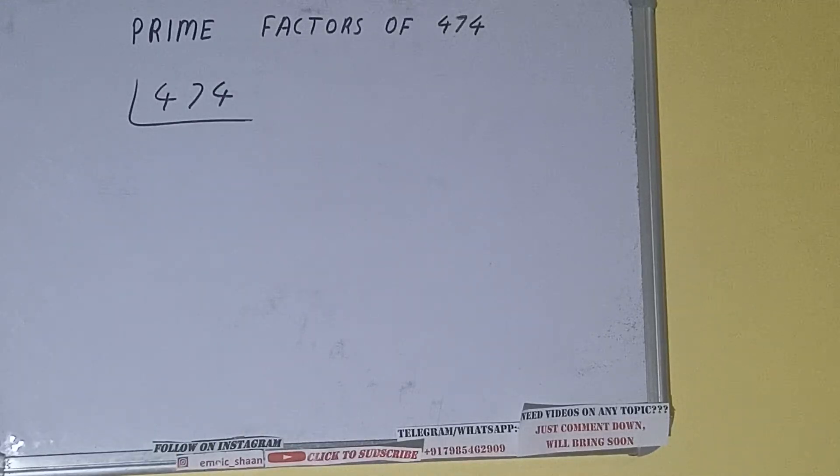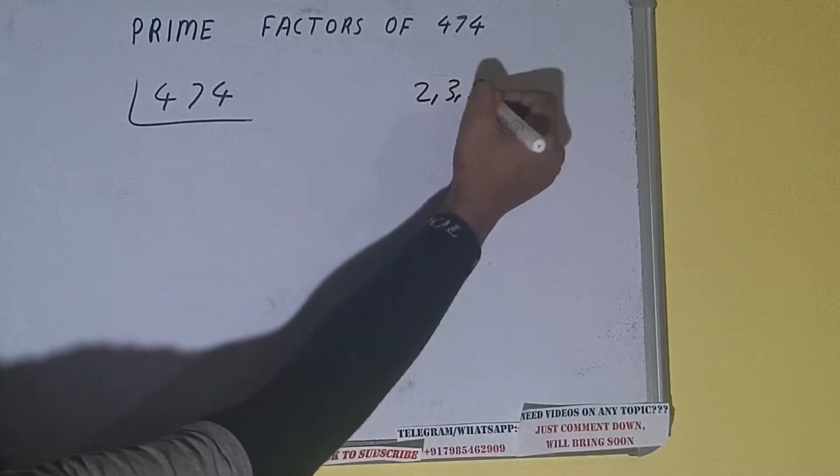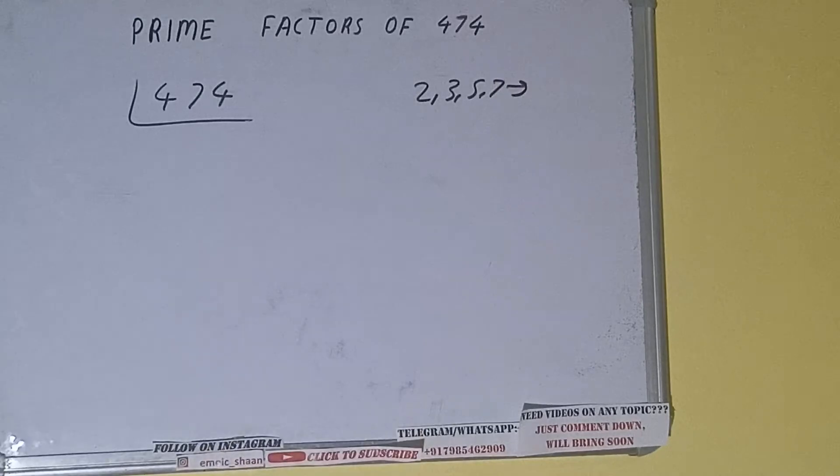The next thing we need to know about is what are prime numbers. Prime numbers are numbers that are divisible by 1 and the number itself, like 2, 3, 5, 7, and so on.